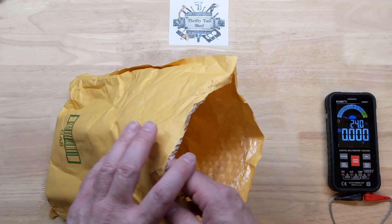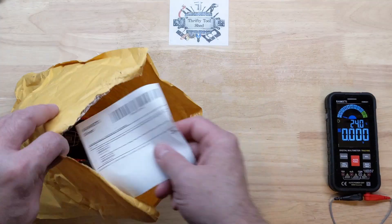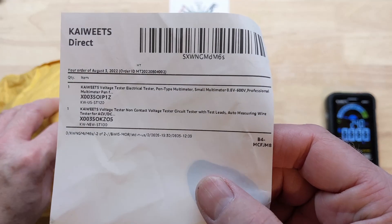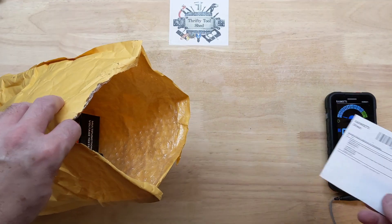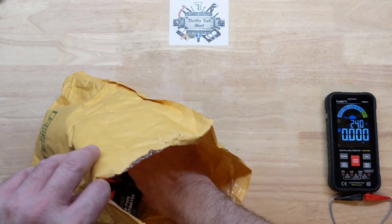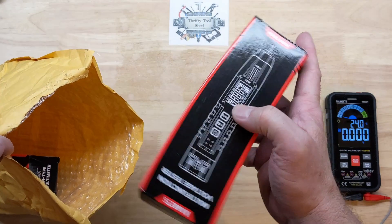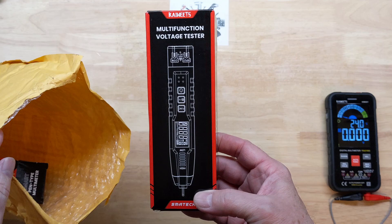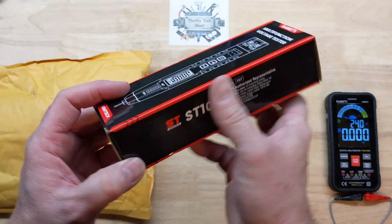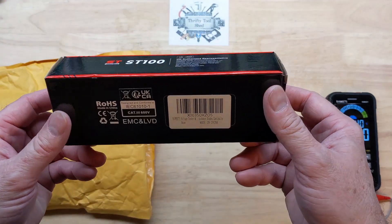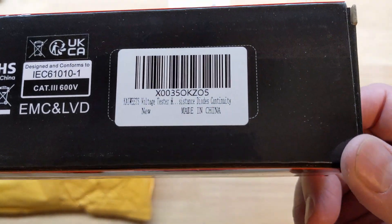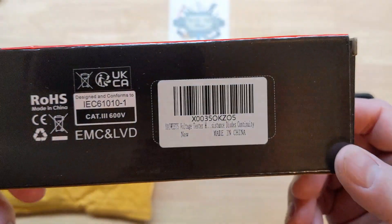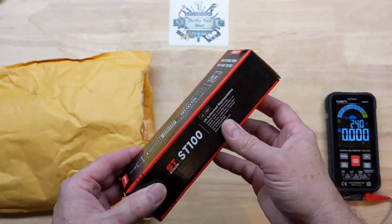Today I thought we'd take a look at these meters sent to us by Kawheets a few months ago. We looked at the KM601 from Kawheets, and today we're looking at a little combo set of a multifunction voltage tester and a pin-type multimeter. This is the ST100.